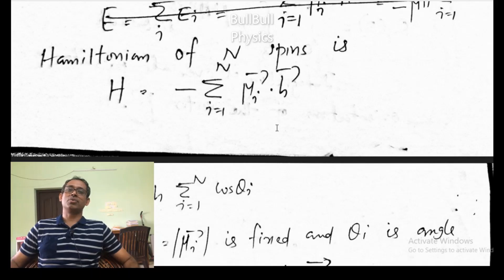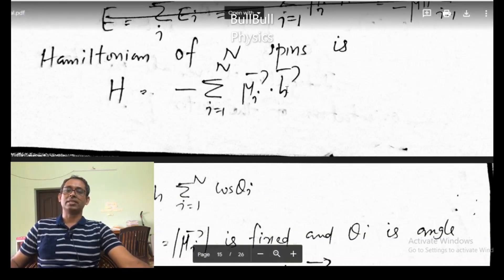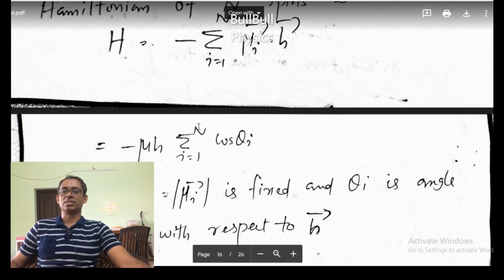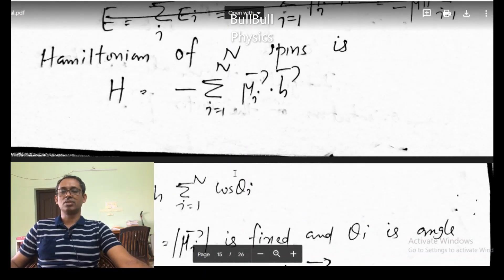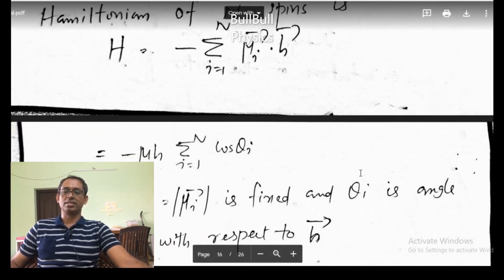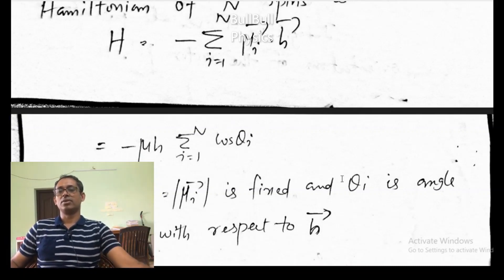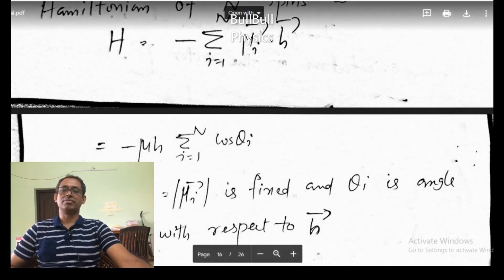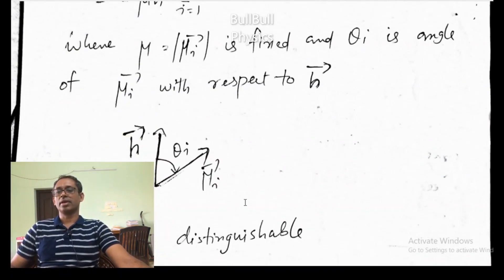The magnitude of the magnetic dipole moment of each of the N dipoles is the same, that is mu. The strength of the magnetic field is the same. So I can take mu and H outside: minus mu H, sigma i=1 to N of cos theta_i. So theta_i — we are now summing over the cosines of the different angles with which the dipoles are orienting with respect to the magnetic field. This is the dipole moment, and this is the direction of the magnetic field, taken in the direction of the z-axis.